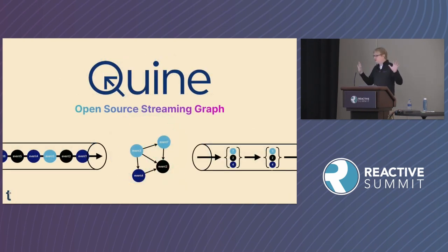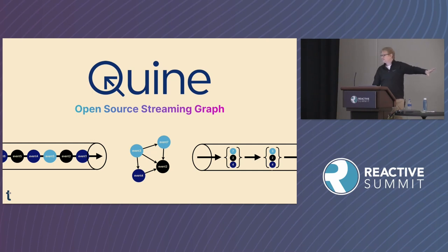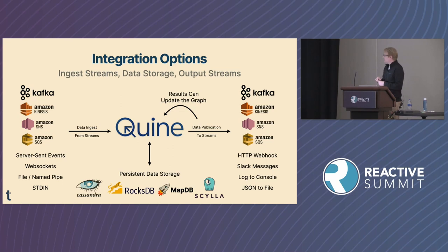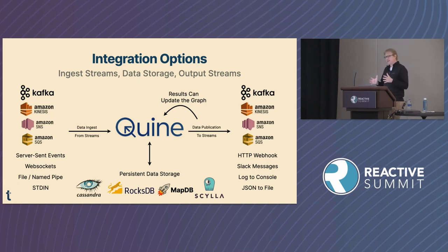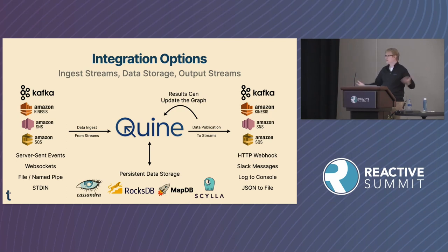Quine gives you the ability to put those pieces together — to join items together to get expressive patterns out of your streaming data and then emit them into a stream in real time. It sits basically between two streams: you plug it into a stream on one side, it builds the graph, then you monitor that graph and stream out those results. There are lots of different connector options — Kafka, Kinesis, SNS, SQS, server-sent events, web sockets, files, named pipes, even standard in and out. And to get over the bounded-by-memory problem, there's a configurable stateful layer using tools like Cassandra and RocksDB.